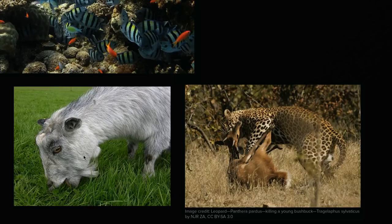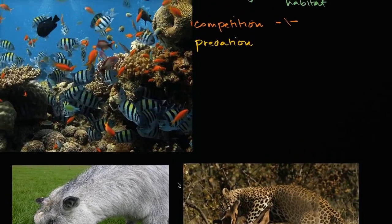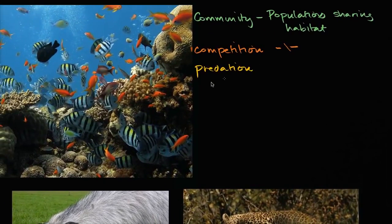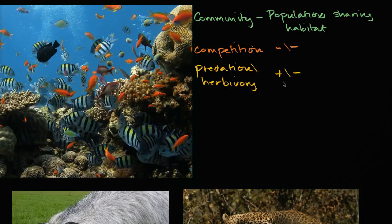Because you have one species eating another species — the goat eating the grass — this specific type of predation is called herbivory, which is a special case of predation. You'll often see a plus-slash-minus notation for predation and herbivory. The more of the prey species there is, the more it benefits the predator. But the more of the predator there is, the more it has a negative effect on the prey.